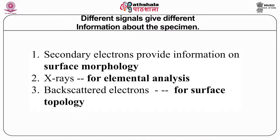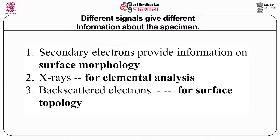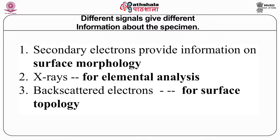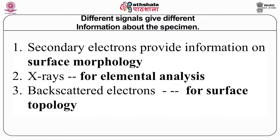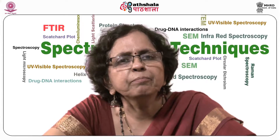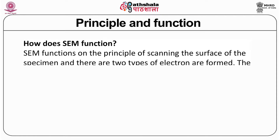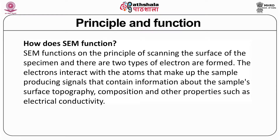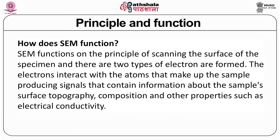The different signals give different information. Secondary electrons give surface morphology as in SEM. X-rays can be used for elemental analysis, which I will cover at the end after studying the whole SEM. Backscattered electrons also give surface topology in more detail — not a 2D but a 3D picture. The SEM functions on the principle of scanning the surface of the specimen; electrons interact with the atoms making up the sample to produce signals that give information about the sample's surface topography, composition, and properties such as electrical conductivity.